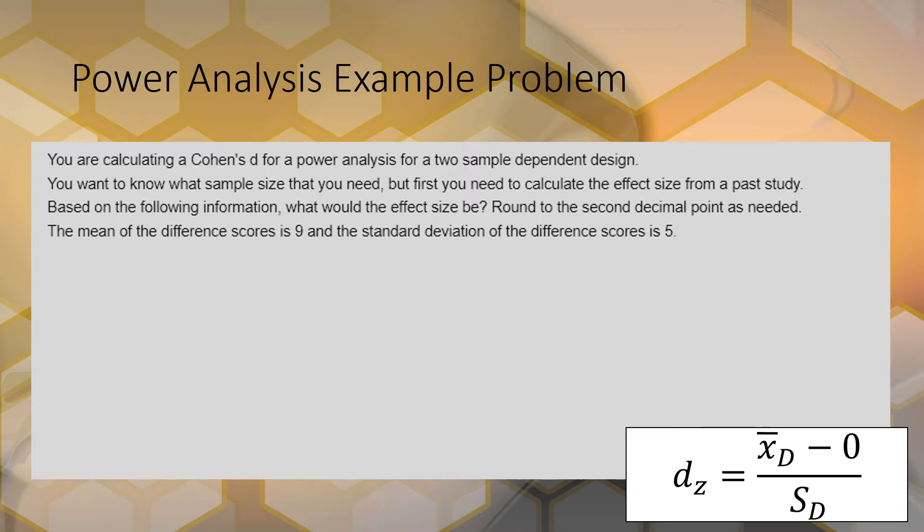The observations are paired. You want to know the sample size that you need, but first you need to calculate the effect size from a past study. Based on the following information, what would the effect size be? The mean of the difference scores is 9 and the standard deviation of the difference scores is 5.